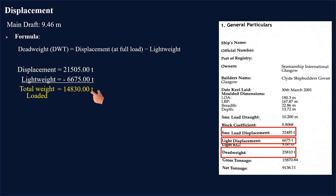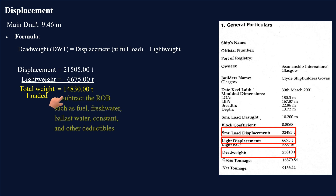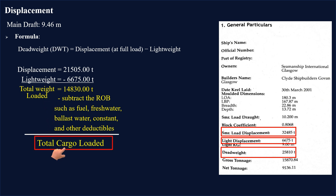Now if we subtract the remaining on board (ROB) items such as fuel, fresh water, ballast water, constants, and other deductibles, the difference is the total weight of the cargo being loaded on board. This topic will be covered in detail in the next video, which is about draft survey.